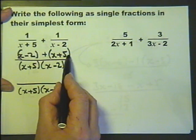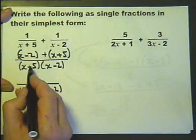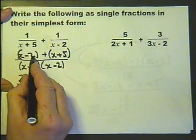The brackets, just remove them. They're not doing a lot. We end up with 2x plus 3.